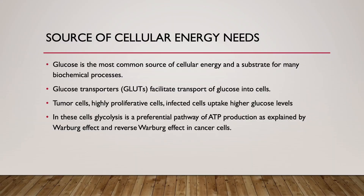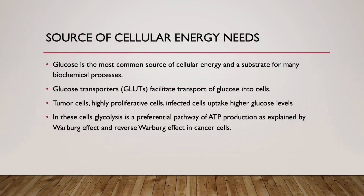Once glucose gets into the cell, it undergoes metabolism where it breaks into different molecules and in the process gives energy. Higher glucose utilization is seen in tumor cells, highly proliferative cells, and infected cells — they all take up higher amounts of glucose. That is why they express an increased number of glucose transporters on the surface and increased metabolic enzymes to degrade glucose for energy, with estimates of around a 20 to 30 fold increase.